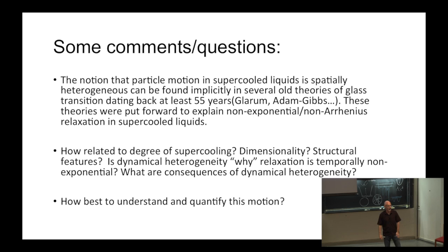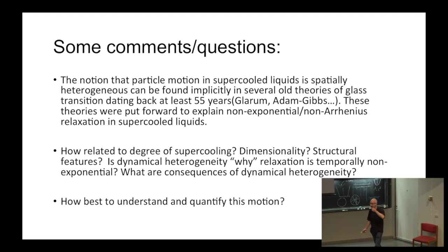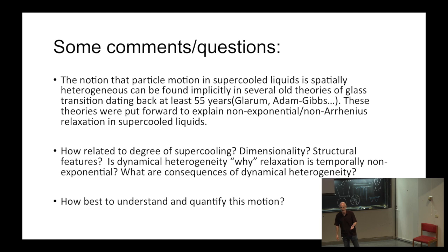The question not addressed in many older theories — although addressed in Adam-Gibbs — is how this relates to the degree of supercooling, how it depends on dimensionality, and what the consequences of dynamical heterogeneity are. I'll show you one consequence in terms of transport coefficients in a second. There's also Jorge's question of what is the chicken and what is the egg — why is this happening? Is this important, or is it a sideshow for supercooling? And how do we quantify the motion and the length scales associated with it?